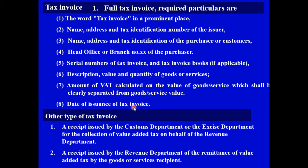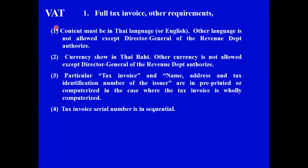If the taxpayer who is the VAT registrant cannot present the full tax invoice, it will be non-deductible input tax and cannot be deducted in the corporate tax calculation. Other types of tax invoices allowed for credit include receipts issued by the customs department or excise department, or receipts issued by the revenue department for remittance of value added tax on received goods or services. If it does not comply with these requirements, it will not be deductible in VAT and consequently not deductible in corporate tax either.